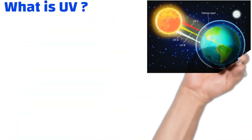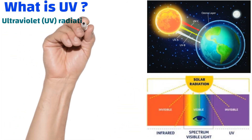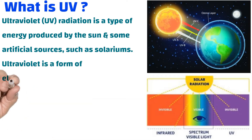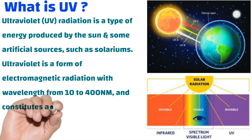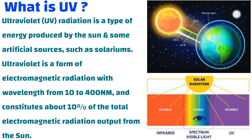What is UV? Ultraviolet (UV) radiation is a type of energy produced by the Sun and some artificial sources such as solariums. Ultraviolet is a form of electromagnetic radiation with wavelengths from 10 to 400 nanometers, and it constitutes about 10% of the total electromagnetic radiation output from the Sun.